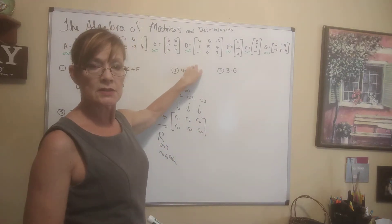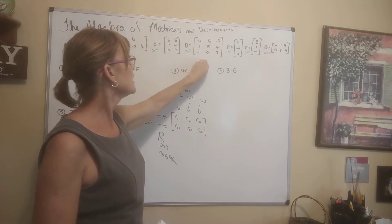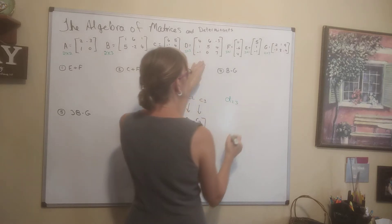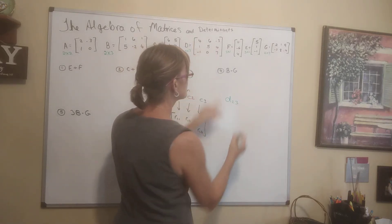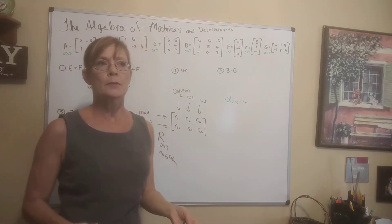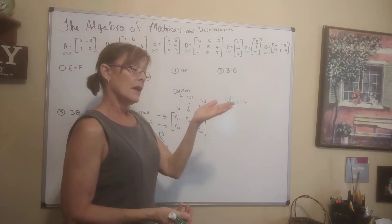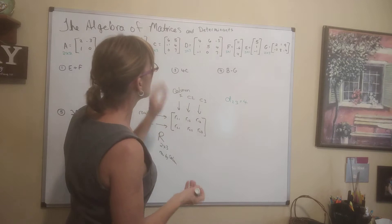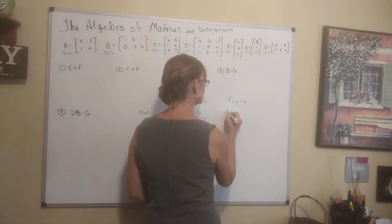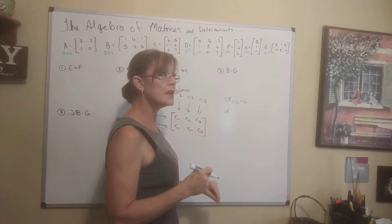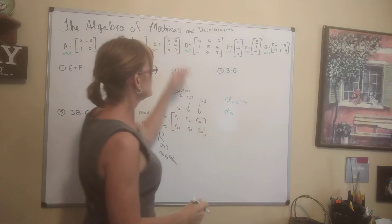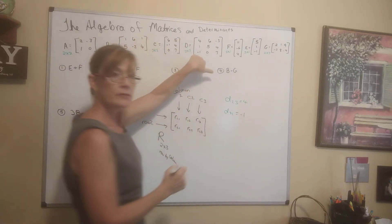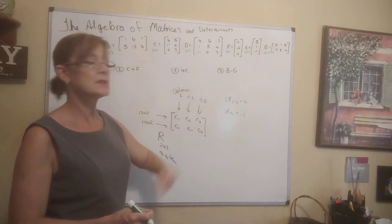Let's look at matrix D. What element is in position row 2, column 3? Going to row 2, column 3, that equals 4. What about row 3, column 1? Going down to row 3, column 1, that equals negative 1. That's how you can talk about specific elements and what those positions mean.